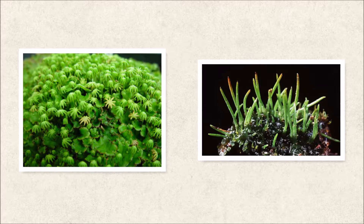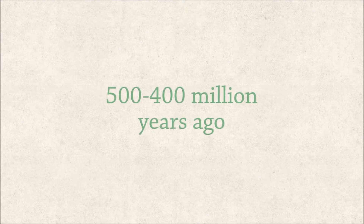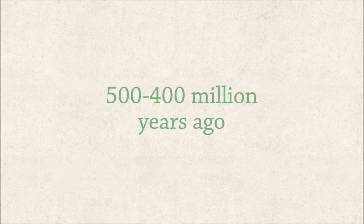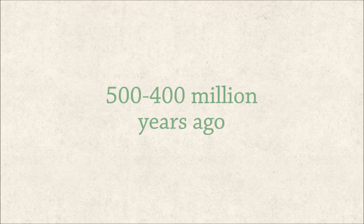Nonvascular plants do not have roots. They use tiny hairs to anchor to the ground, and these hairs help them absorb water and nutrients. These plants originated around 500 to 400 million years ago.